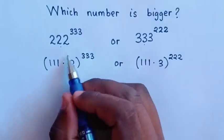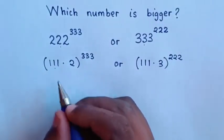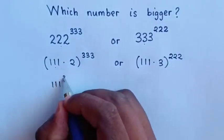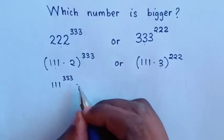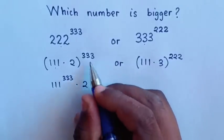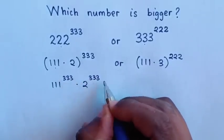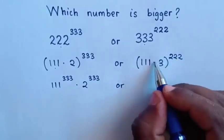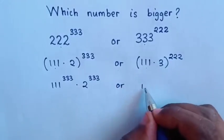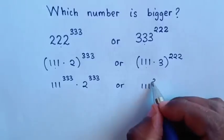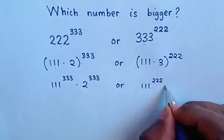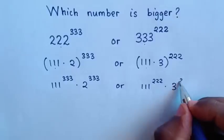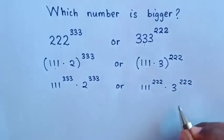Then, we multiply the power inside the bracket, so it will be 111 power of 333 times 2 power of 333. Or, we multiply the power inside the bracket, so it will be 111 power of 222 times 3 power of 222.